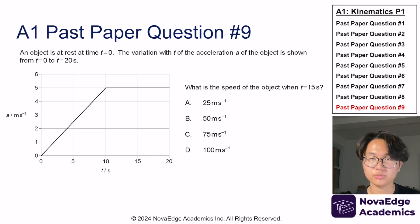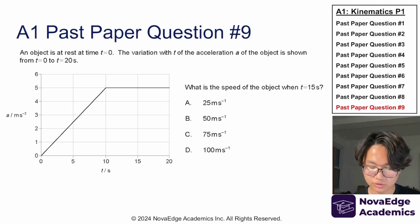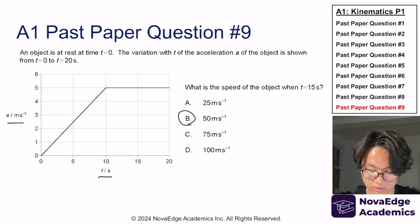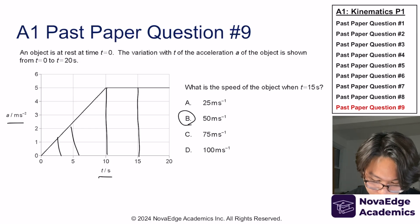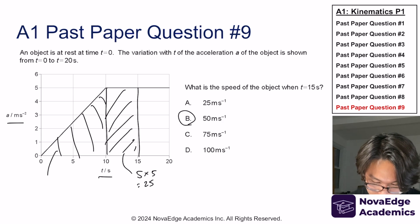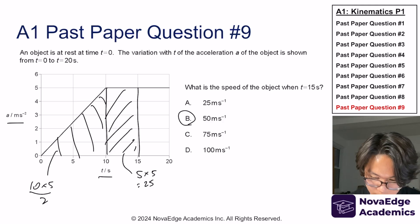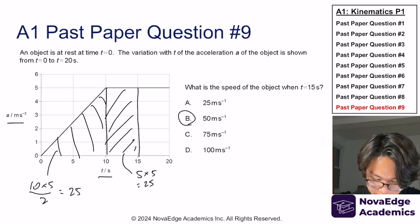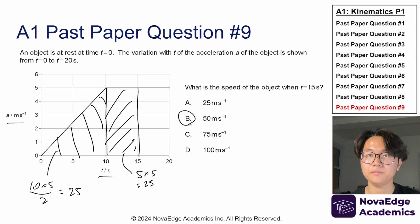Now let's try this past paper from topic A1. If you chose answer B, you are absolutely correct. The speed when t equals 15 is represented by the area underneath the acceleration-time graph. The first region is 5 times 5, which is 25. The second region is 10 times 5 divided by 2, because we want half the rectangle — that's also 25. So 25 plus 25 equals 50.